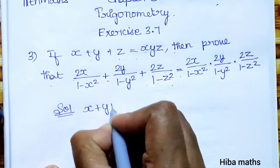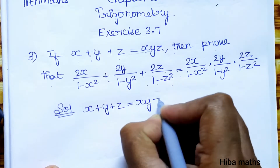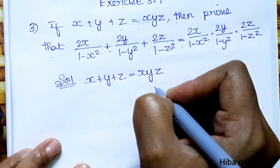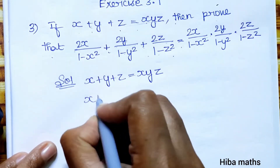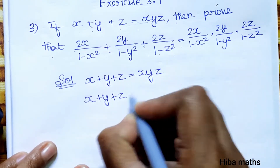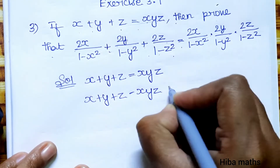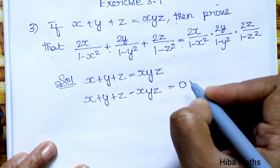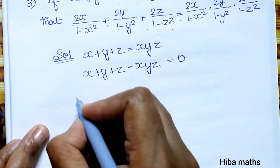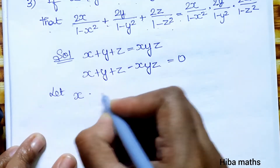Given that x plus y plus z is equal to xyz, we will rearrange this. We rewrite it as x plus y plus z minus xyz equal to 0, where xyz is the product of three terms.